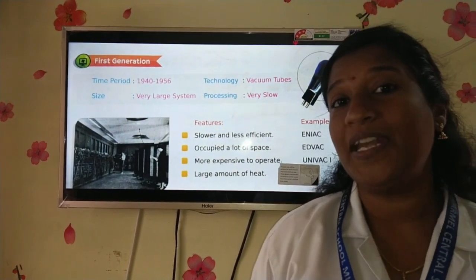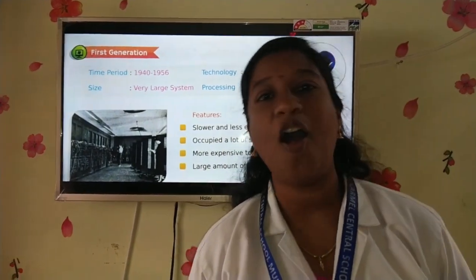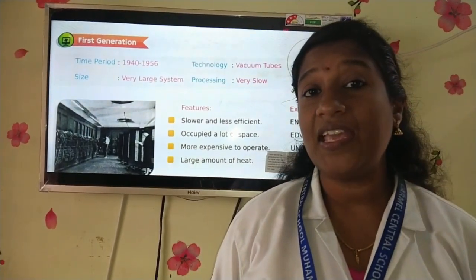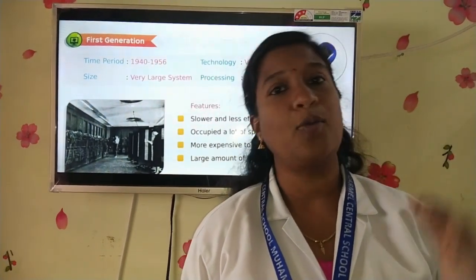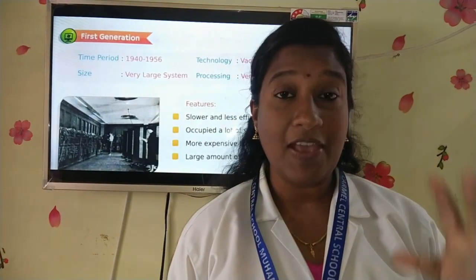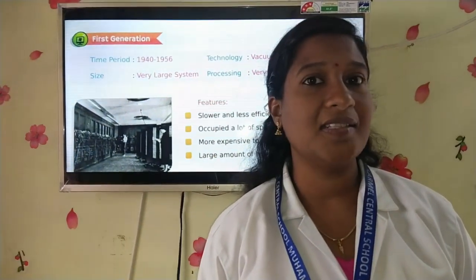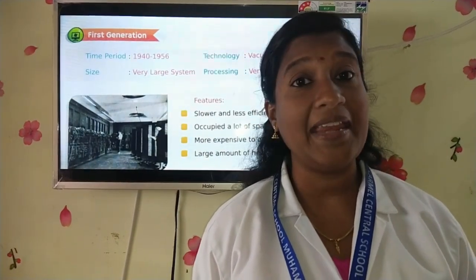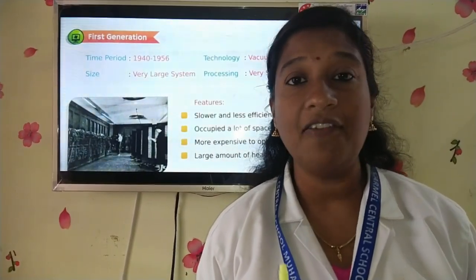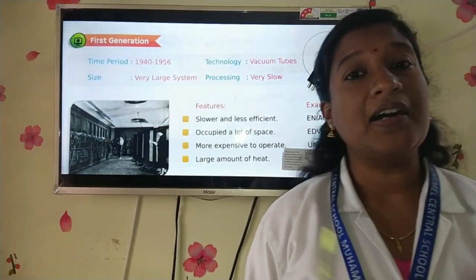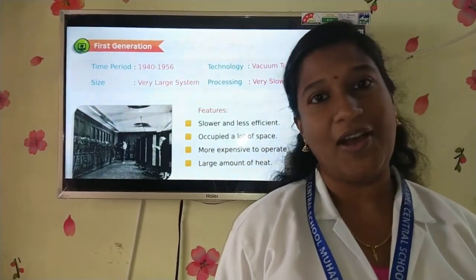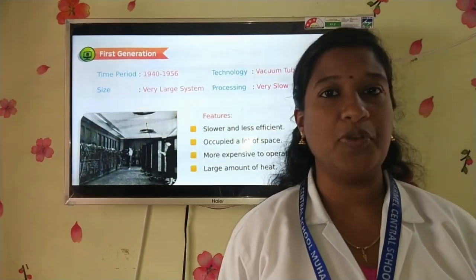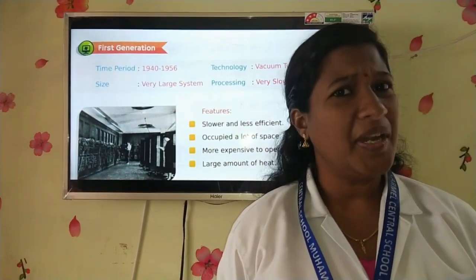Today we are going to deal with the generations of computers. In our previous classes we were keeping track of the early calculating devices. We started from Abacus, then Napier's bones, the difference engine, the analytical engine, ENIAC, and EDSAC. We have looked at a lot of early calculating devices.